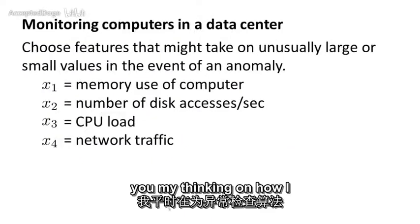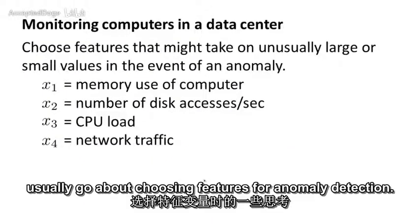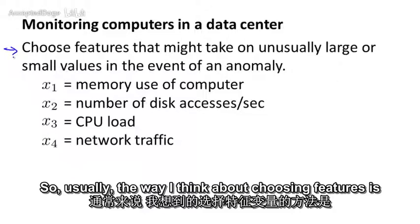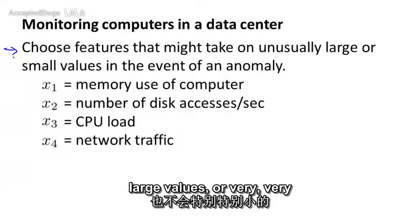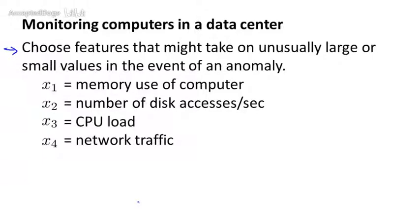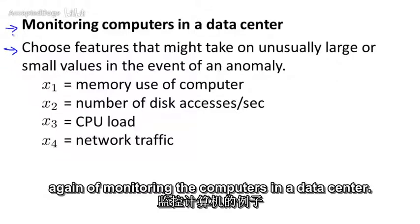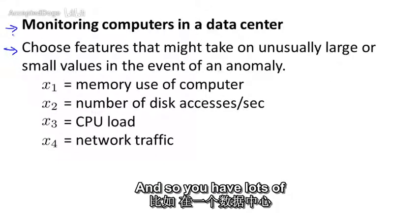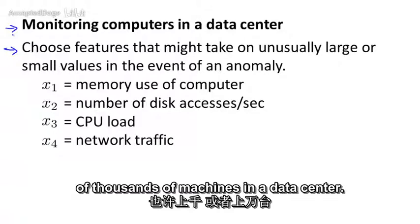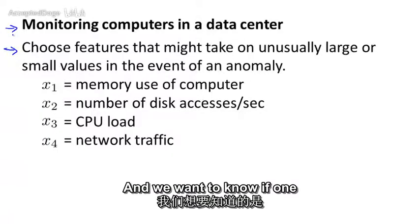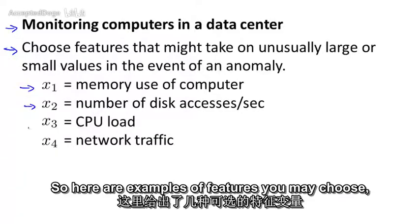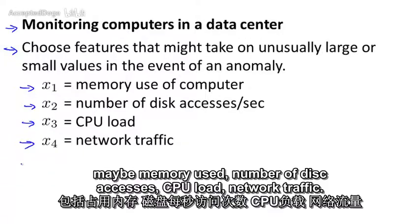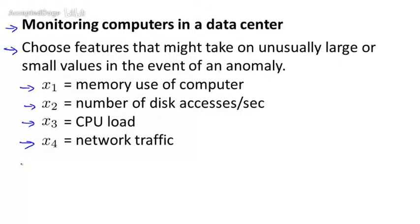Let me share my thinking on how I usually go about choosing features for anomaly detection. I want to choose features that might take on either very large or very small values for examples that I think might turn out to be anomalies. Let's use the example of monitoring computers in a data center — thousands of machines — and we want to know if one is acting up. Examples of features: memory use, number of disk accesses, CPU load, network traffic.